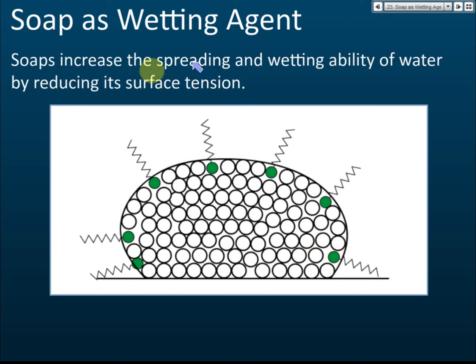If we add soap into this water, we know that soap consists of two parts: a hydrophobic part and a hydrophilic part. The hydrophobic part does not like water — it hates water — but the hydrophilic part likes water. As a result, the hydrophilic part goes into the water, but the hydrophobic part remains outside because it cannot dissolve in water. So we can see there are a lot of soap molecules around the water droplets, remaining on the surface.